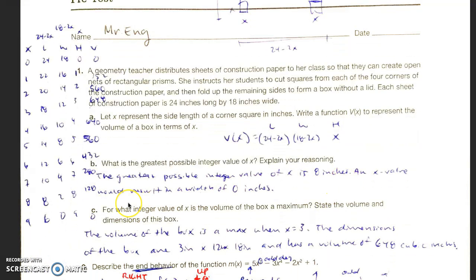For what integer value of x is the volume of the box a maximum? So you're looking at this list, which is the biggest number. That would be 648. That would be with an x value of 3. So the dimensions of the box are 3 inches, 12 inches, and 18 inches, and it has a volume of 648 cubic inches.